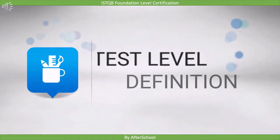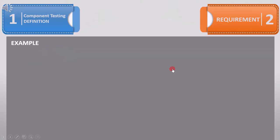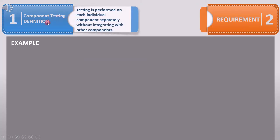In this lecture, we are going to compare the definitions of different test levels. Let's first see the definition of component testing. Here, testing is performed on each individual component separately, without integrating with other components. So when we conduct component testing, we focus on the individual, and it's not connected with any other parts of the software.